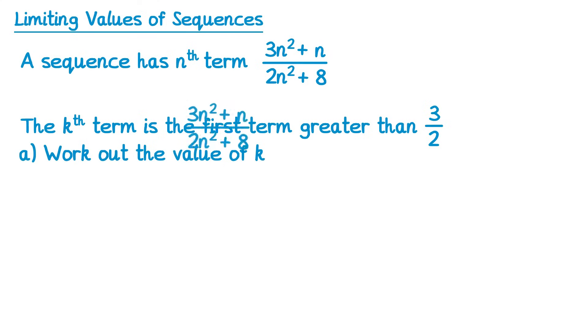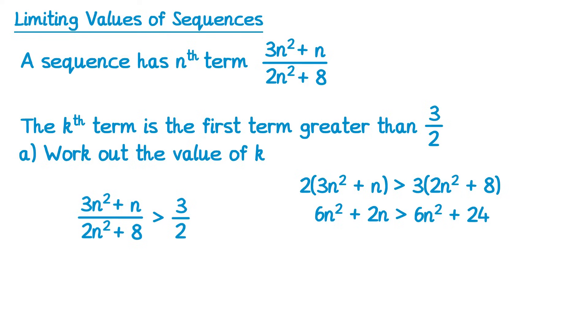So we want our nth term to be greater than, so we write a greater than symbol, 3 over 2. Again we'll just cross multiply here, so 2 lots of 3n squared plus n is greater than 3 lots of 2n squared plus 8. If we expand the left-hand side, we get 6n squared plus 2n is greater than the right-hand side, 6n squared plus 24. Now you can subtract 6n squared from both sides, so you'll end up with 2n is greater than 24, and then divide both sides by 2, so n is greater than 12.